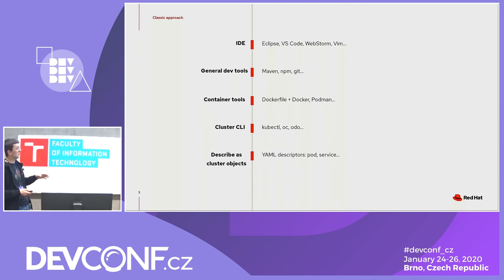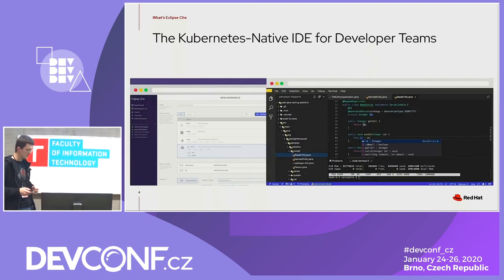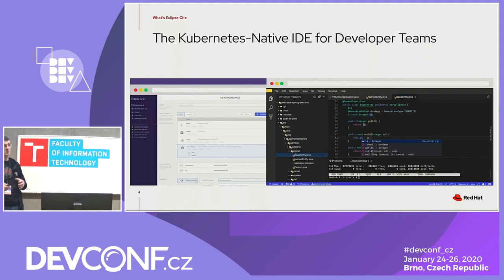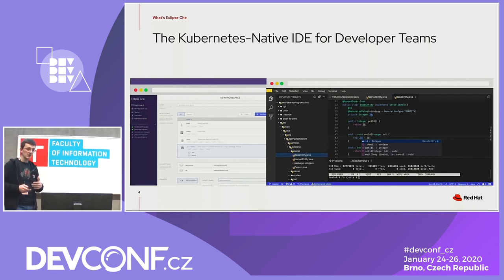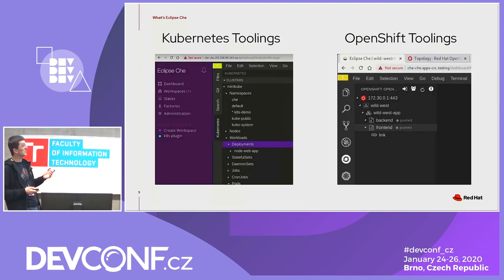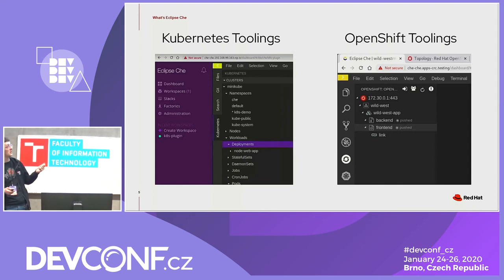Of course we can add many more steps here, but let's talk about what Eclipse Che can propose. Just a couple of words for those who maybe haven't heard about Eclipse Che. It's a cloud-native IDE, which means that it can not only be deployed to an OpenShift cluster, but also you are able to deploy your application from your development environment to the cluster using the Kubernetes and OpenShift toolings that Eclipse Che provides.